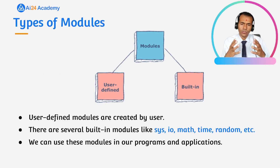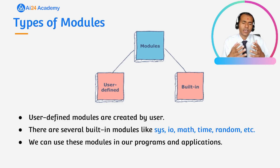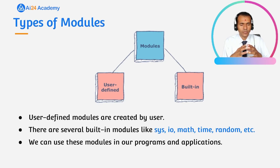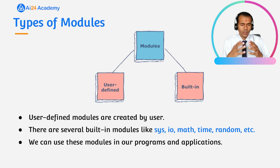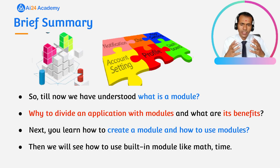We should use modules for faster application development, to increase code reusability, for ease of testing, debugging and resolving errors, and to save time, resources, and money. There are two types of modules: user-defined modules, which are created by users like us, and built-in modules, which are available within the Python programming language — such as io, math, random, time, and matplotlib. We can use these built-in modules directly without defining their functionalities ourselves.